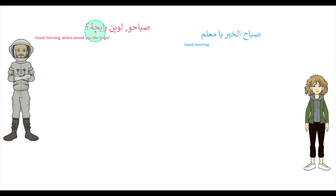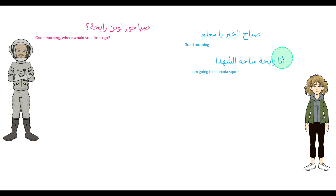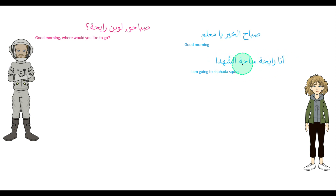Then he says لوين رايحة — where are you going to? Here we've used the active participle; you could use the active participle or the present tense, and here I chose the active participle as we would tend to do. She says أنا رايحة ساحة الشهداء — I'm going to Martyrs' Square. ساحة means square.